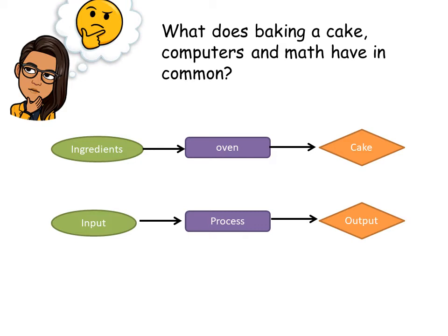So in this case the ingredients are the input — the thing that you put in. You mix them together and put them in the baking dish; the processing would be the oven, which has to heat everything up. And then the output is a cake, or the result. Now in math we have a similar principle.